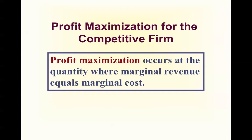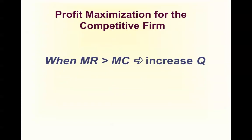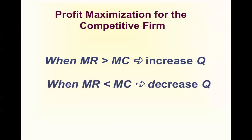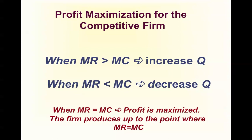This re-emphasizes that profit maximization occurs where marginal revenue equals marginal cost. Where MR is greater than MC, increase quantity. Where MR is less than MC, decrease quantity. You produce up to the point where marginal revenue equals marginal cost.